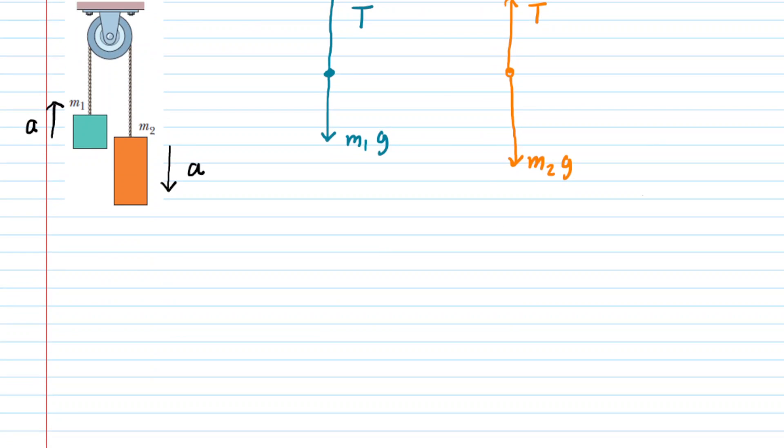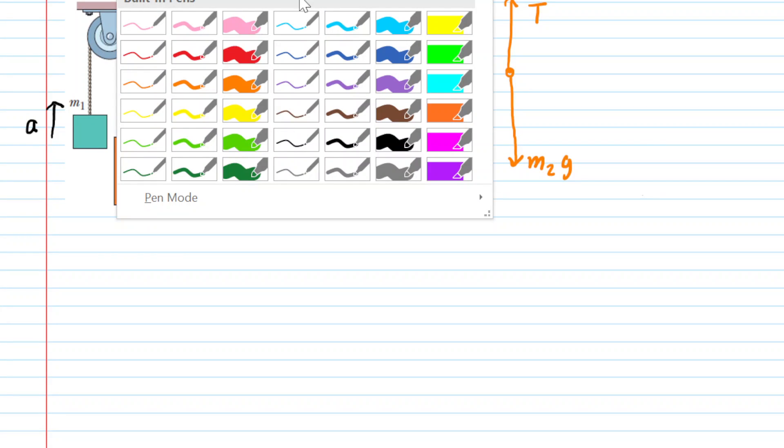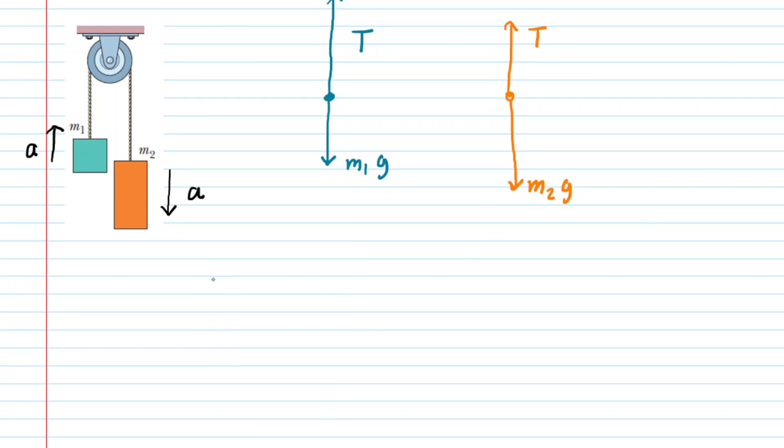We next turn to Newton's second law and apply it to both blocks. For block 1, we will say the net force is equal to the mass of block 1 times its acceleration. Now, remember block 1 is accelerating in this direction upward, so we will arbitrarily call that direction positive, the opposite direction can be negative. And therefore, we have positive tension minus that gravitational force, and then this is equal to M1 times a.